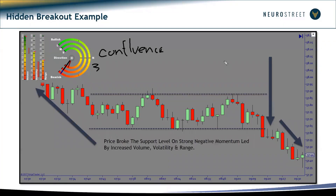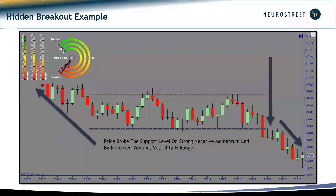The barometer lets you use three time frames of evidence without having three charts or different screen real estate. We haven't even talked about the internals yet, which will add even more confluence. The other aspect of the time frames is using overbought and oversold conditions. When we're in the fourth section — overbought or oversold — and we start to see the big time frame and medium time frame are oversold, then the small time frame starts to change, this is a leading indicator that the oversold condition is expected to become a reversal.